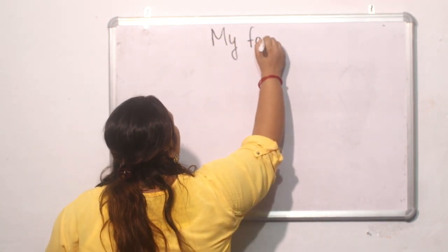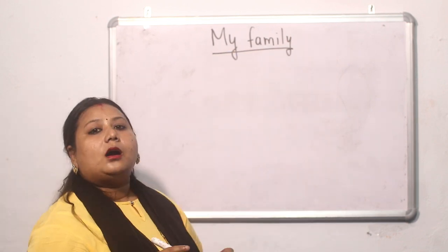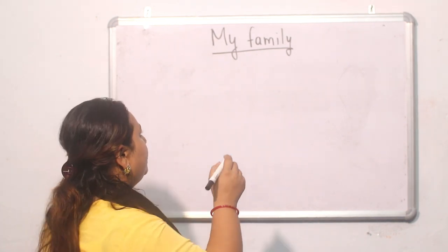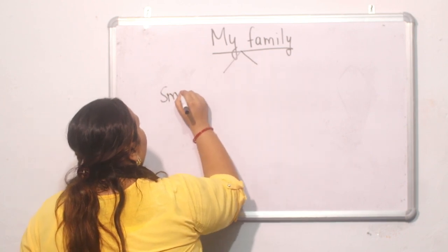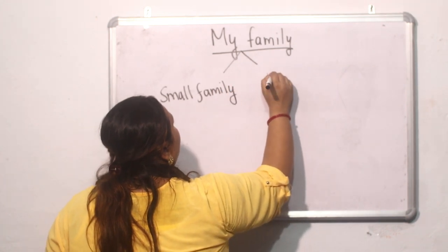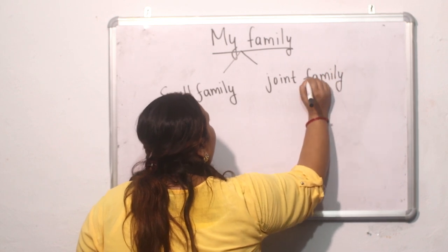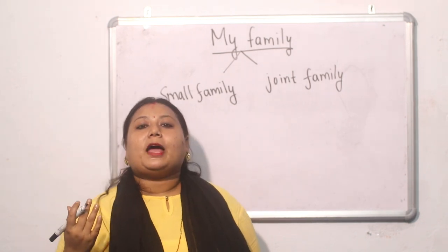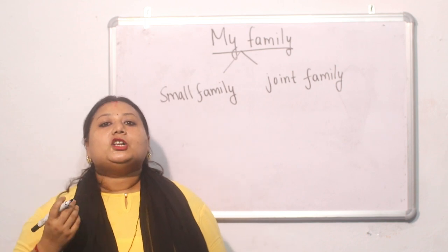Family means people who live together with us. There are two types of family. Small family and joint family. Small family is a type of family in which there are father, mother and their children.